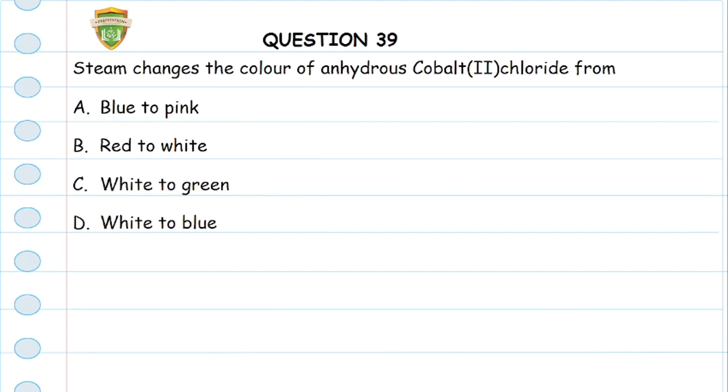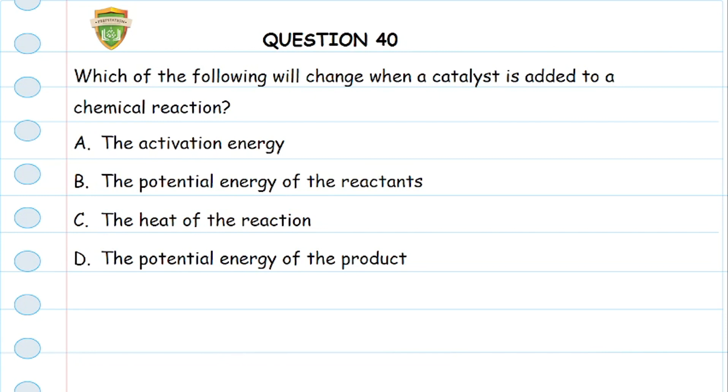Question 39: Steam changes the color of anhydrous cobalt(II) chloride from blue to pink. Anhydrous means that the cobalt(II) chloride, which is an efflorescent substance, does not have water. What steam does is add water of crystallization. Cobalt(II) chloride is really blue without its water of crystallization, but when steam is added or when water is added, it changes to pink. So the answer is option A.